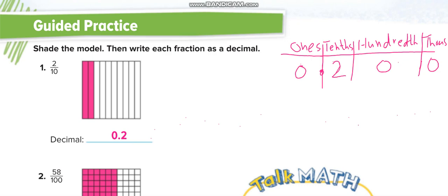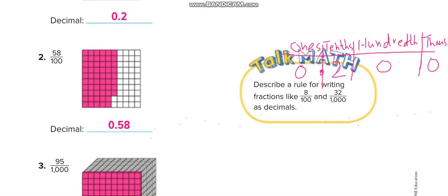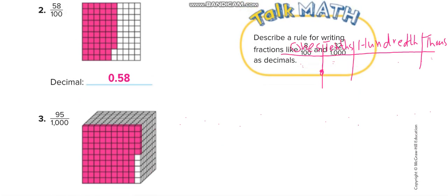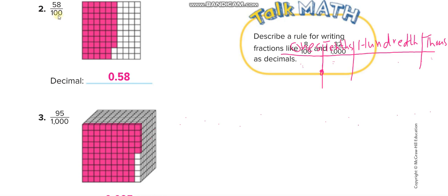Here it is fifty-eight over one hundred. Out of one hundred, fifty-eight are shaded. We write it as a decimal: 8 in the hundredths place, 5 before it, zero to fill — so zero point five eight. The place value of the last digit is hundredths, so we read it: fifty-eight hundredths.